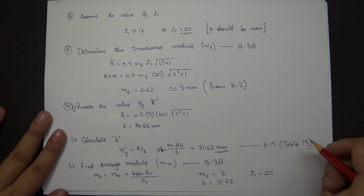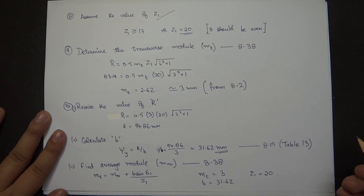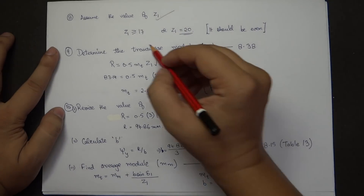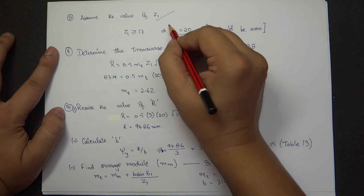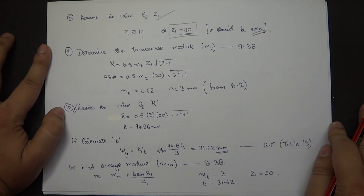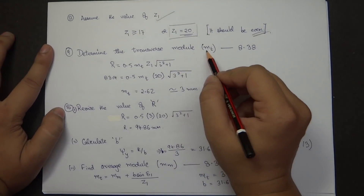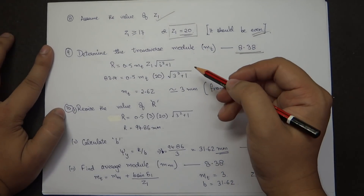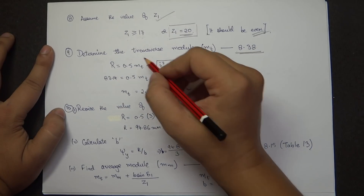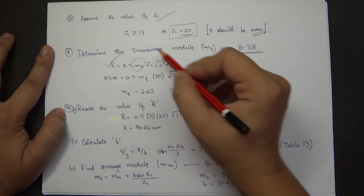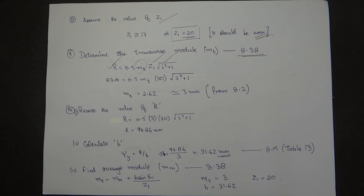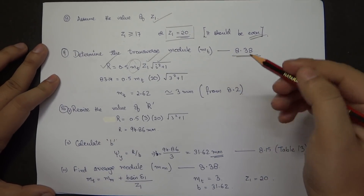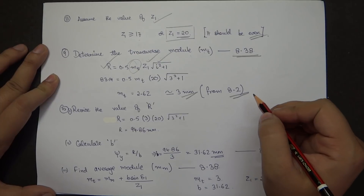The eighth step is the assumption of Z1. Since no tooth type is specified, Z1 ≥ 17; I'll take Z1 = 20 (even and greater than 17). The ninth step is determination of transverse module M_T from page 8.38, using R, Z1, and I. The calculated M_T = 2.62, which standardized from page 8.2 gives M_T = 3 mm.